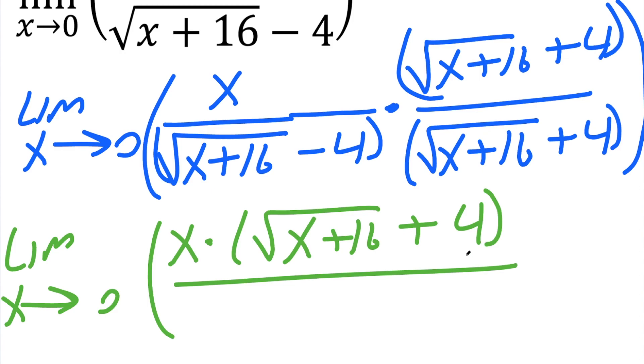Now, when we multiply these two pieces, we have the square root of x plus 16 times the square root of x plus 16, and so it gets canceled, so we get x plus 16.